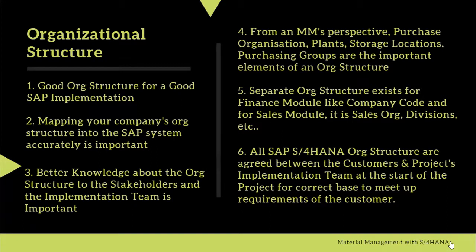From a material management perspective, there are org elements that form the organizational structure, such as plants, purchase organizations, storage locations, and purchasing groups. Similarly, there are separate org elements available for different modules — for the finance module it is typically the company code, and for the sales module it is typically a sales organization or division. These three modules — MM, FI, and SD — are considered the core modules in SAP.